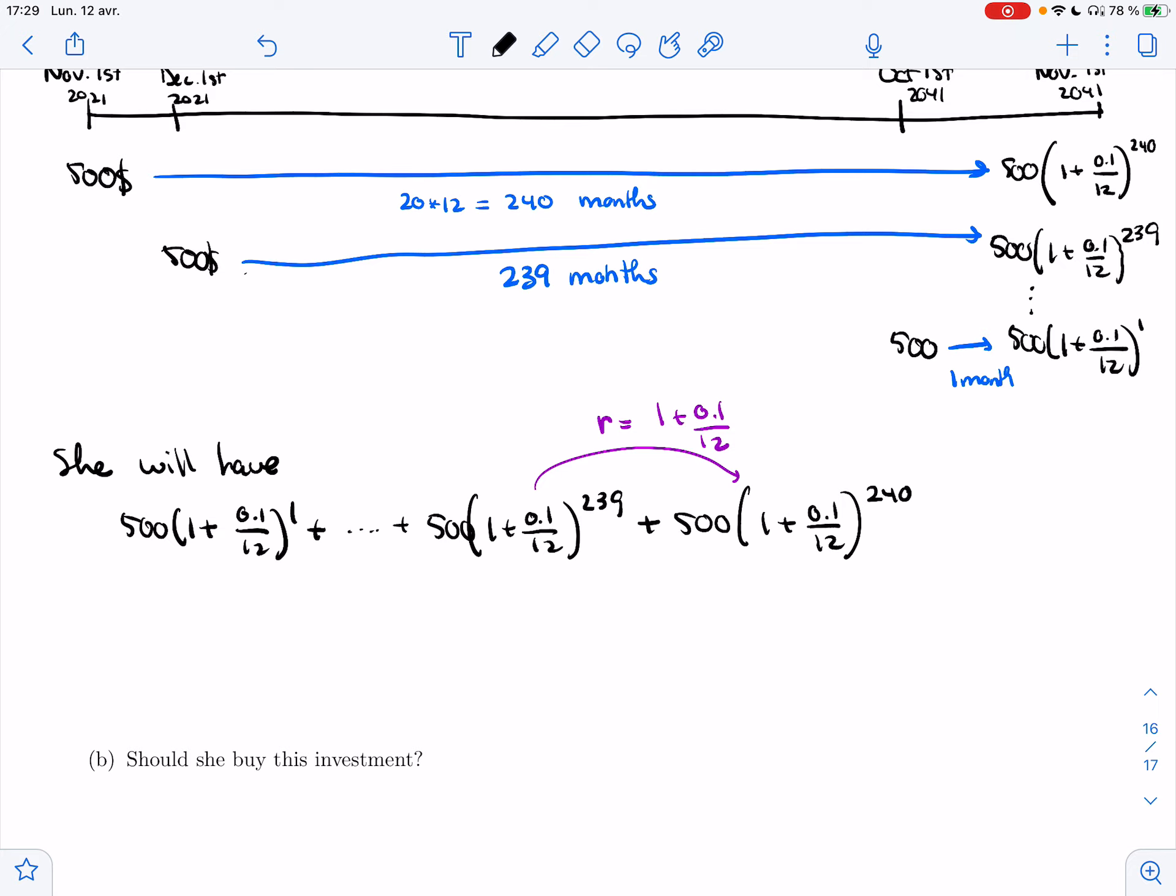So the formula tells us that this is equal to 500(1 + 0.1/12) minus the next would be 500(1 + 0.1/12)^241 over 1 minus the ratio, minus (1 + 0.1/12).